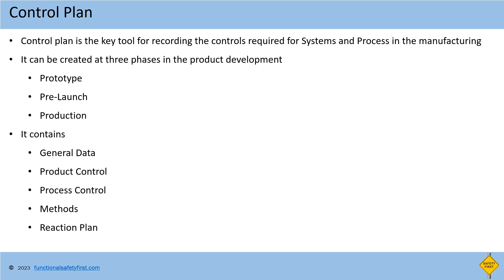Control plan is the key tool for recording the controls required for systems and process for each step in the manufacturing process. Control plan can be created at three phases in product development. First, prototype — an initial phase used to produce a small quantity of product for engineering purposes. Next, pre-launch — a stage after prototype and before full production, where a small quantity of product is produced for testing, dedicated manufacturing lines are established, and production rehearsals are started. Finally, the production stage, where mass production of products is done.